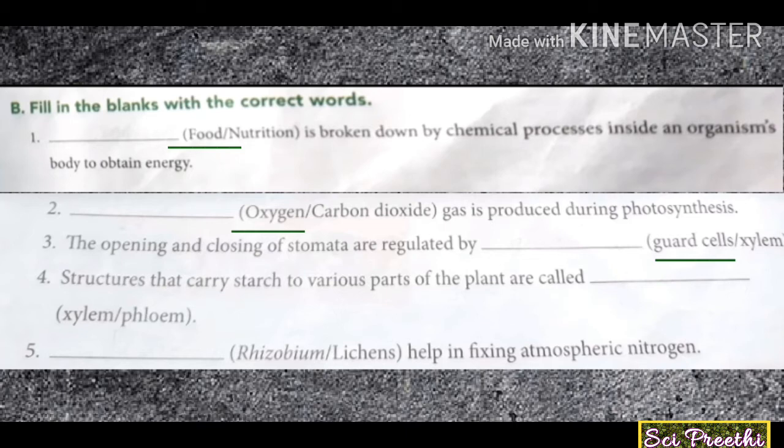Fourth question: structures that carry starch to various parts of the plant are called — xylem or phloem? Xylem transports water and minerals, so the answer is phloem. Fifth question: — help in fixing atmospheric nitrogen. Rhizobium helps in fixing atmospheric nitrogen.